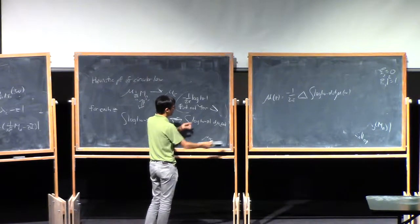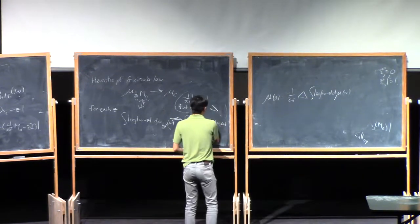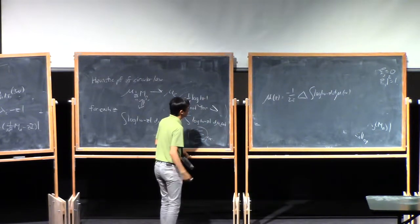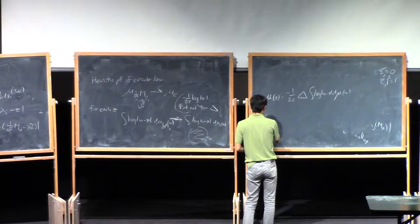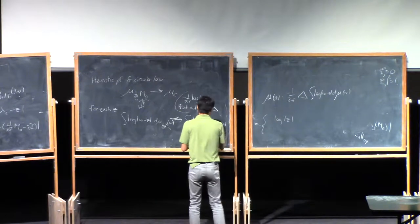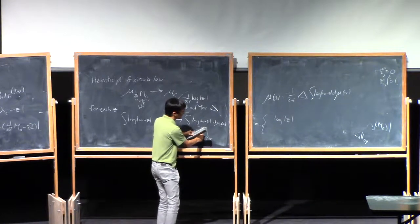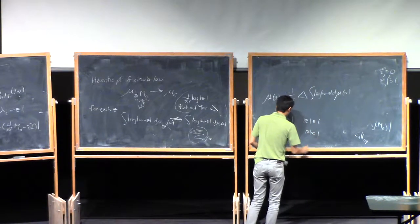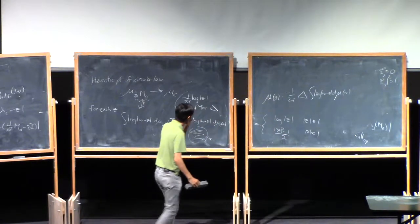This log potential is an explicit integral — you're integrating the log of something on a disk — and this is something you can compute explicitly. You can use, for example, Jensen's formula, or just go ahead and integrate it directly; it's basically an elementary integral. What you find after some computation is that if Z is far away from the spectrum, the circular measure is equivalent to a point mass and you get log Z for Z outside the disk. But for Z inside the disk, you get a quadratic function: Z squared minus one over two.